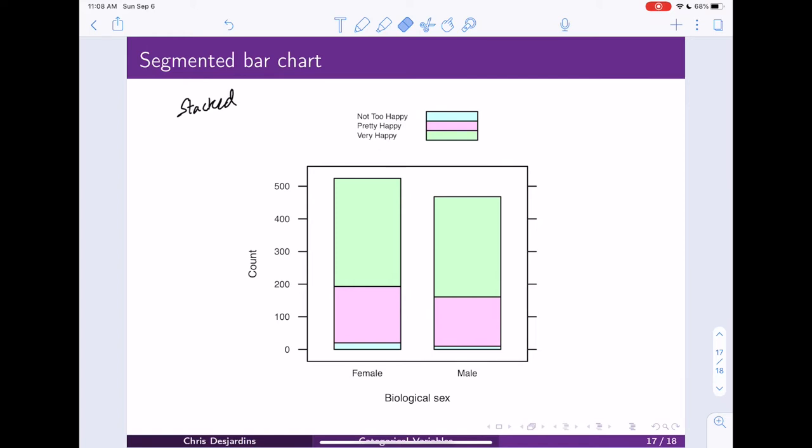But if we wanted to just say, for example, focus on the not-too-happy, the very bottom, we can see that this category for female is definitely larger than the category for male. And because there's more females than there are males, maybe that would be expected. If there's more females, maybe we would just expect that there would be more not-too-happy people in that category, just because of the fact that there were more of them taking the survey.